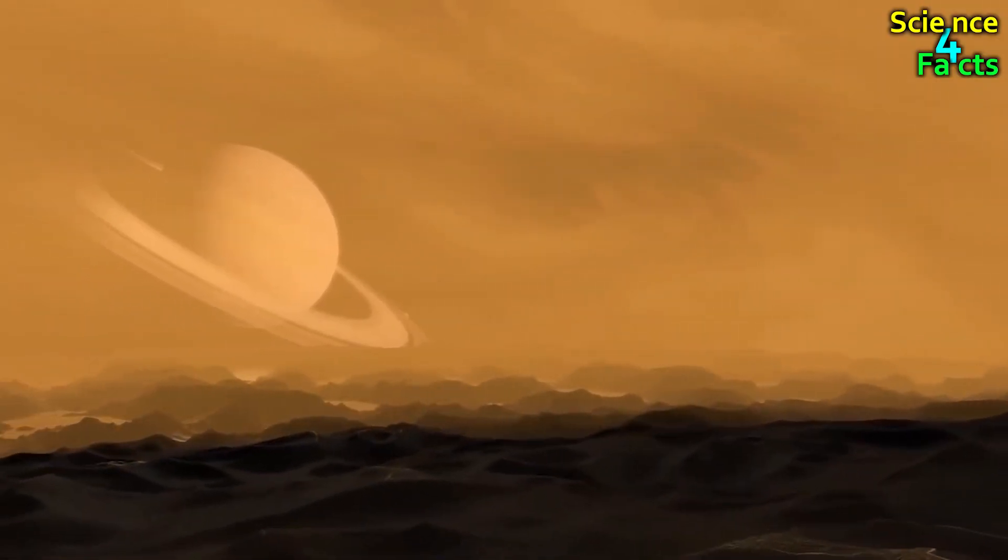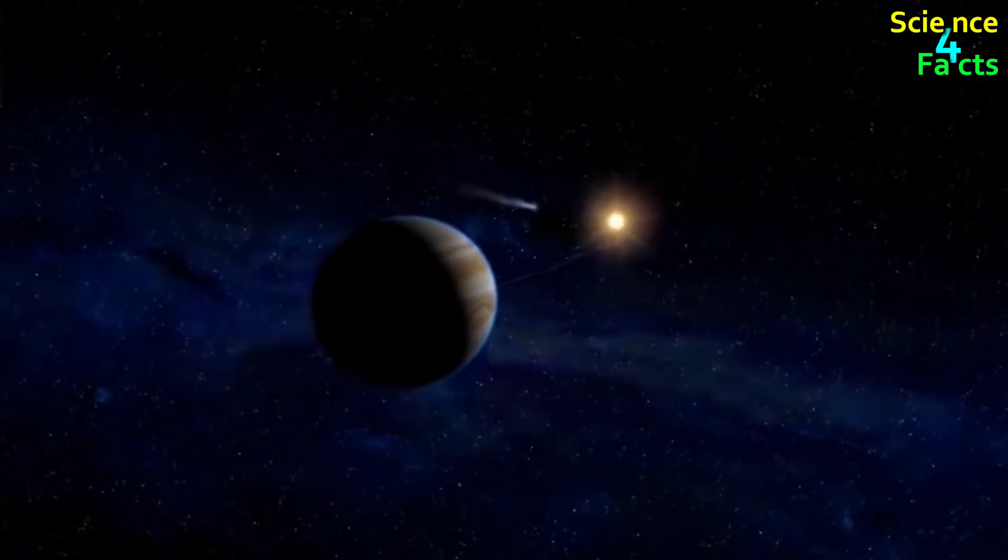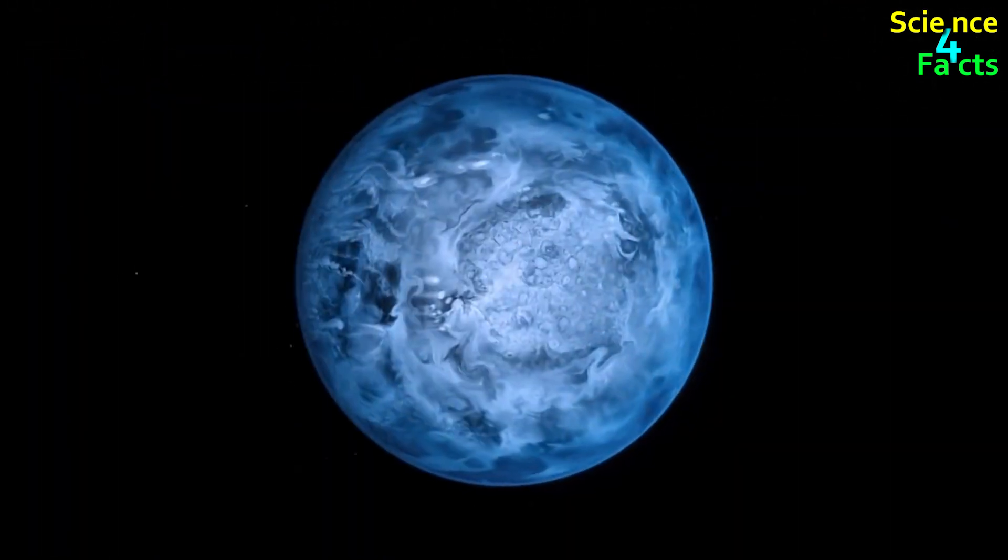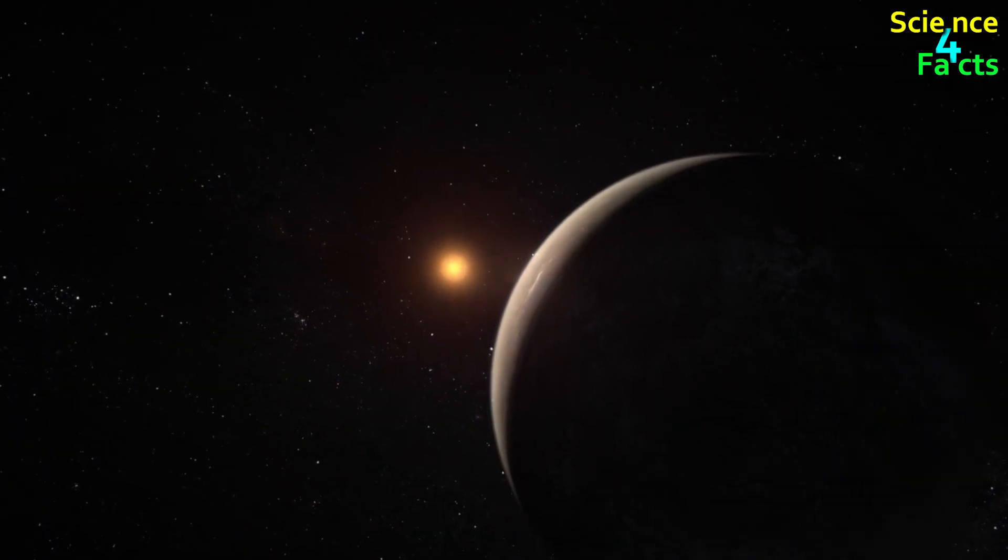Methane rain occurs on Titan only once every thousand years. Similarly, we have already discovered many exoplanets outside the solar system. All the rains that fall on those planets are even more strange, terrifying, and surprising to us.